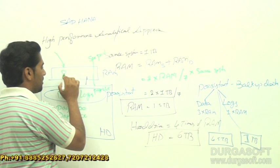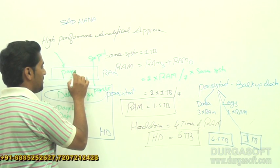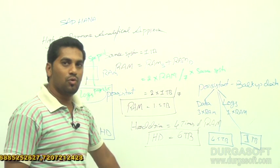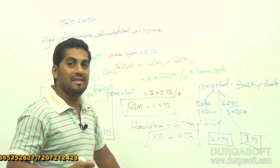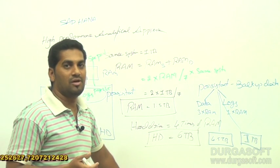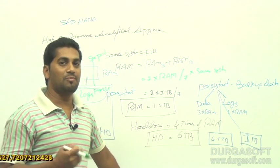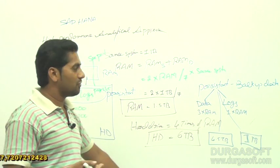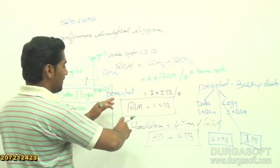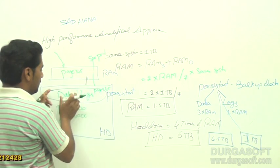So when you restart your system, the same page 345 will be taken as backup. It will take the backup automatically — no need to do anything here. So for persistence, it needs some storage of data for logs.